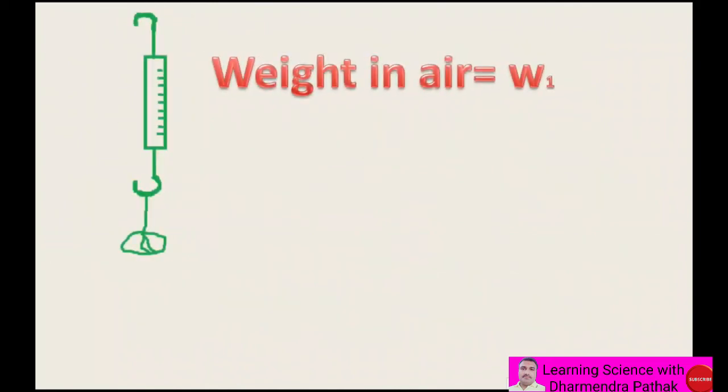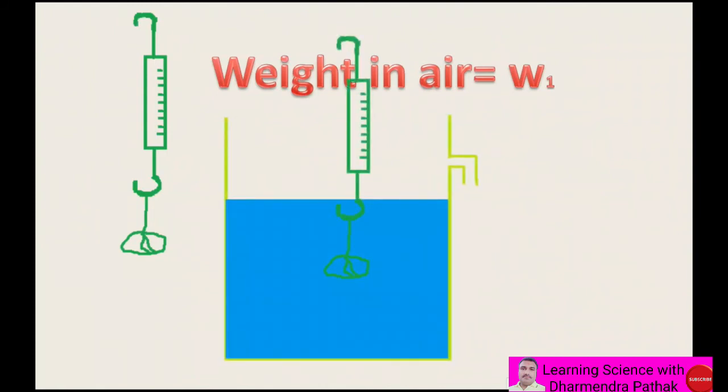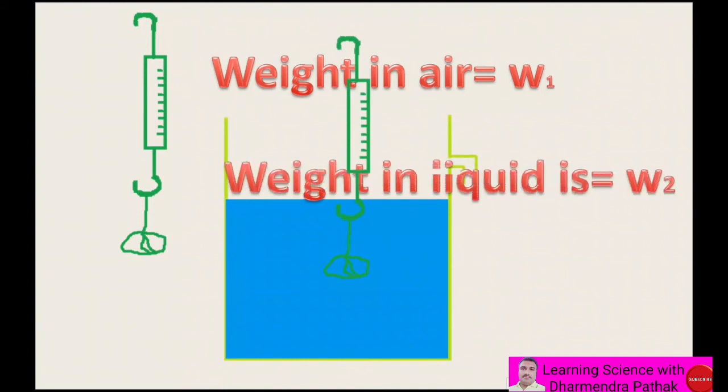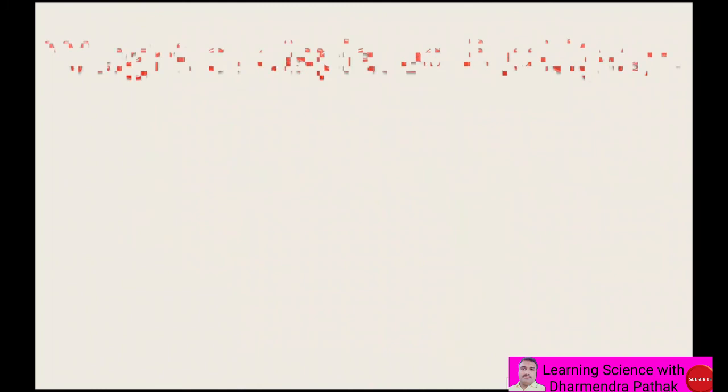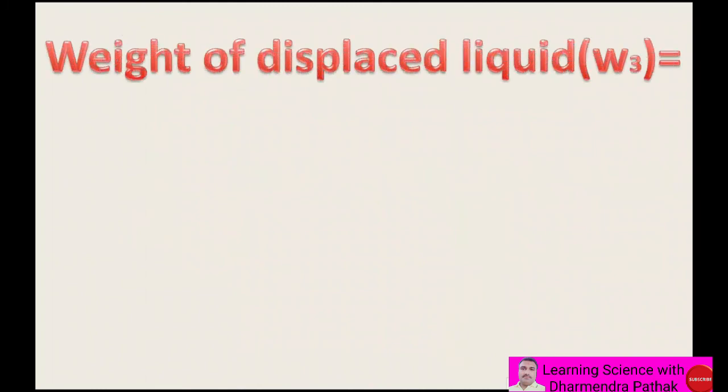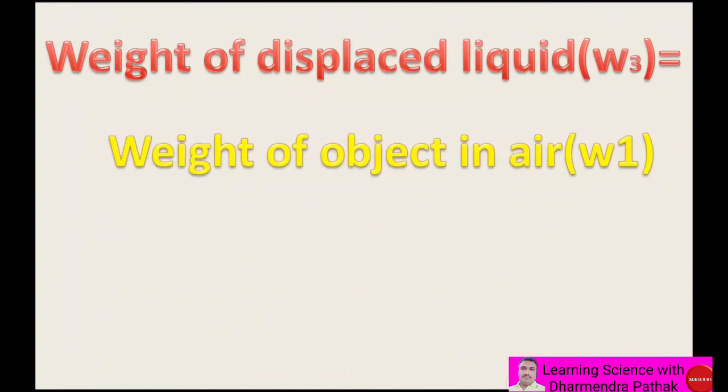Let us consider an object has weight in air W1, weight in water W2, and weight of displaced liquid W3. Then weight of displaced liquid W3 equals weight of object in air W1...